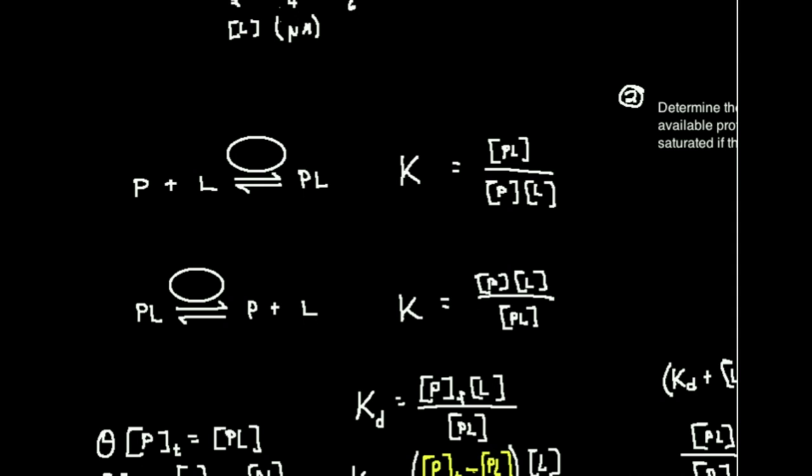In all of these videos that we're going to do on this topic, the P right here stands for protein. L stands for ligand. If you've never seen those terms before, protein is what you've been talking about probably since general biology. Proteins are just strands of amino acids bound together and they do various biological functions.